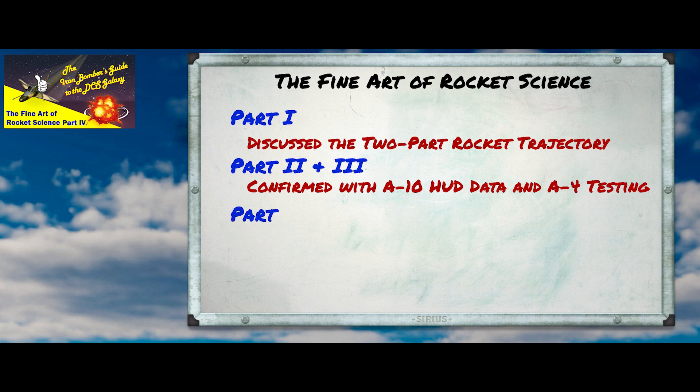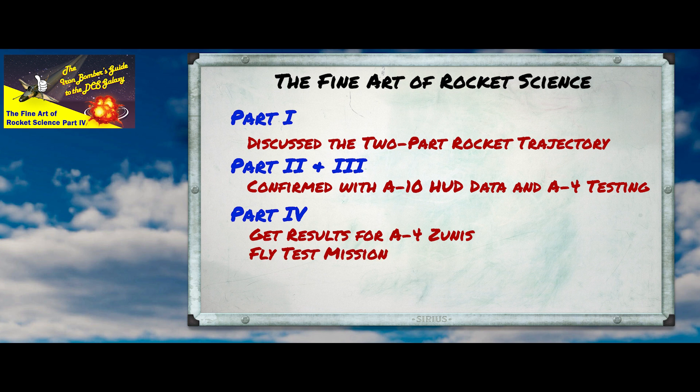We looked at firing Hydra 70s from the A-10 and FFARs from the A-4. Today we're going to finish off the A-4 by looking at the 5-inch Zuni rockets. We'll quickly look at the results of some testing we did on the range in episode two, then we'll make a sight depression table and go out and try using Zunis against some targets. So let's get started.